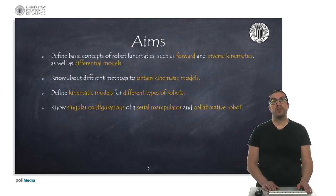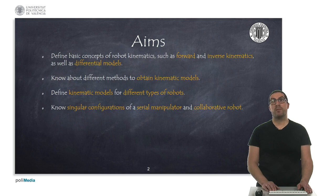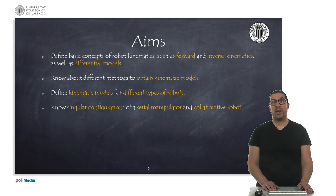The aims of the presentation are to define some of the basic concepts used in robot kinematics such as forward and inverse kinematics or differential models. I will mention different methods for obtaining kinematic models that we will explain in specific videos. Here, I only intend to show you how kinematic models should look like for different robot types, without going into the details of all the maths behind.